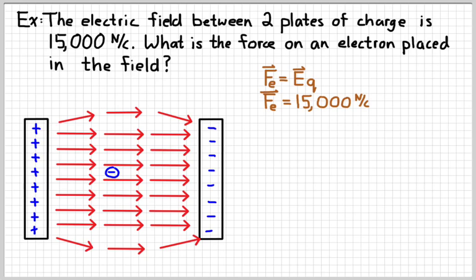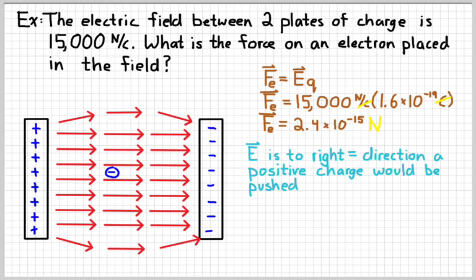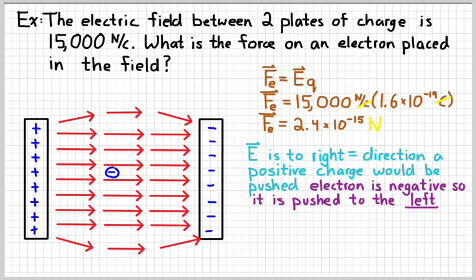We're given the field, and we can look up the charge on an electron — it's on our formula chart, the elementary charge, 1.6 times 10 to the negative 19 coulombs. Doing the math gives a very small number, and the coulombs cancel out leaving the unit of newtons. Since those arrows indicate the direction a positive charge would move, and since the electric field is to the right, our electron is going to be pushed to the left. Negative charges get pushed in the opposite direction of the electric field.